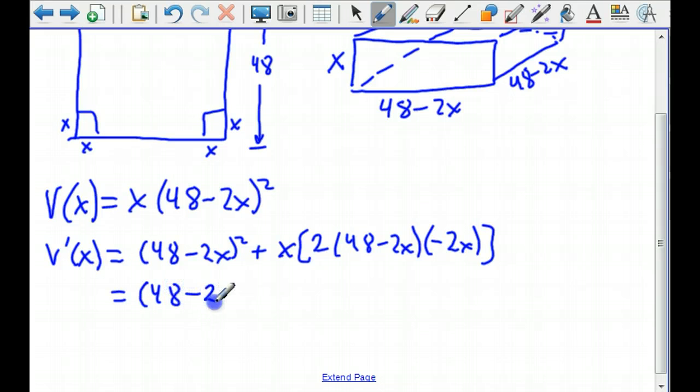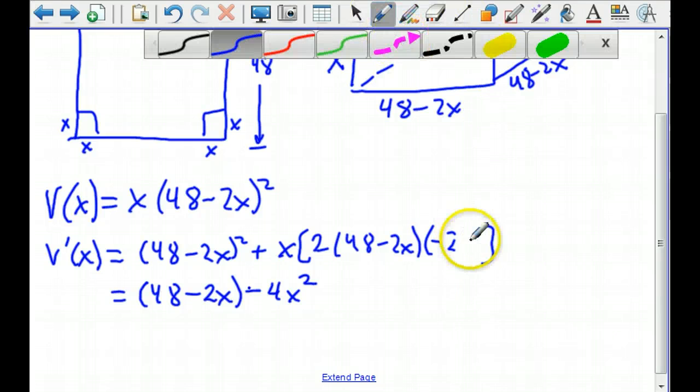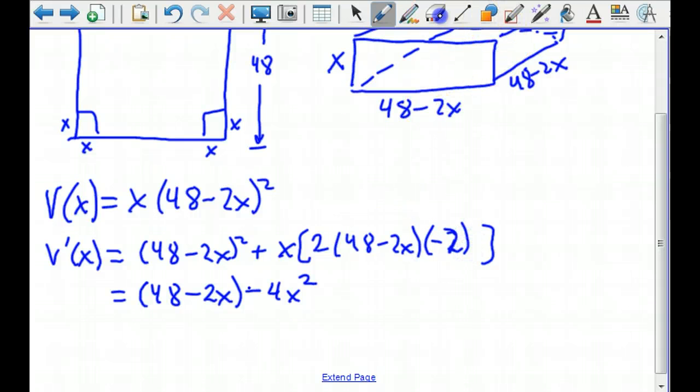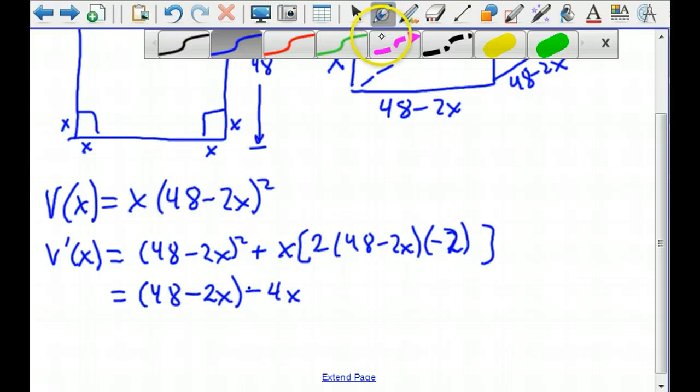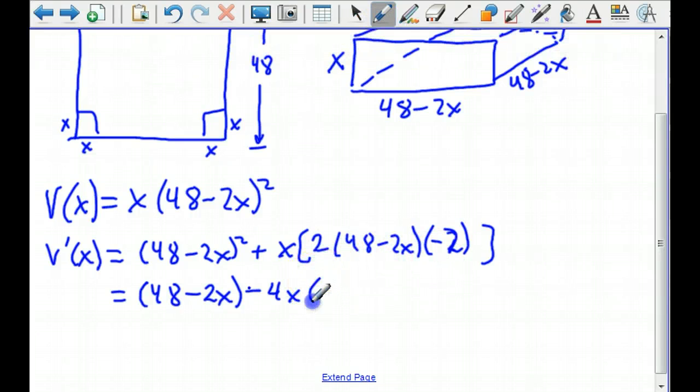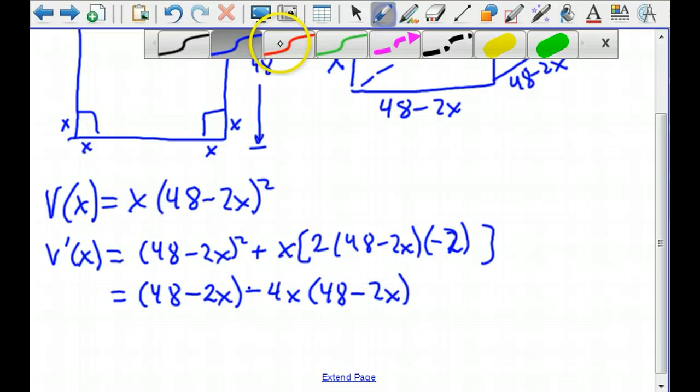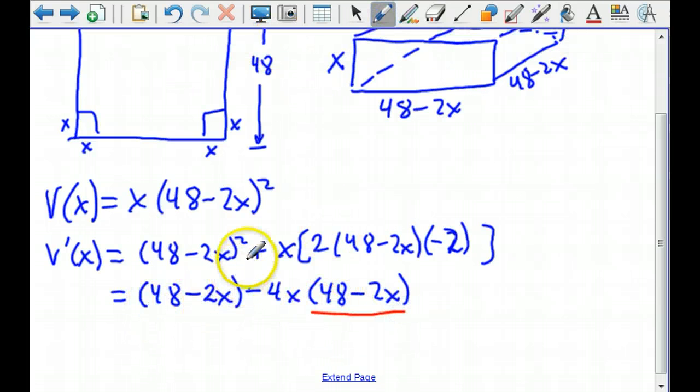Simplifying as much as I can, I've got negative 2x times 2 times 2x, which is negative 4x squared, which isn't right, is it? The derivative of 48 minus 2x is negative 2. So that means I need to fix that. So it's going to be negative 4x times 48 minus 2x. That should be squared right there.